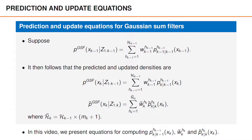In Gaussian sum filtering, we assume that the posterior at time k-1 is a Gaussian mixture with capital H k-1 terms, weights w k-1 of h k-1, and Gaussian densities p k-1 given k-1 of h k-1 of x k-1. Using derivations similar to what you've seen in videos about the conceptual solution, one can show that the predicted density is a Gaussian mixture with the same number of terms and the same weights, whereas the density for every hypothesis has changed.